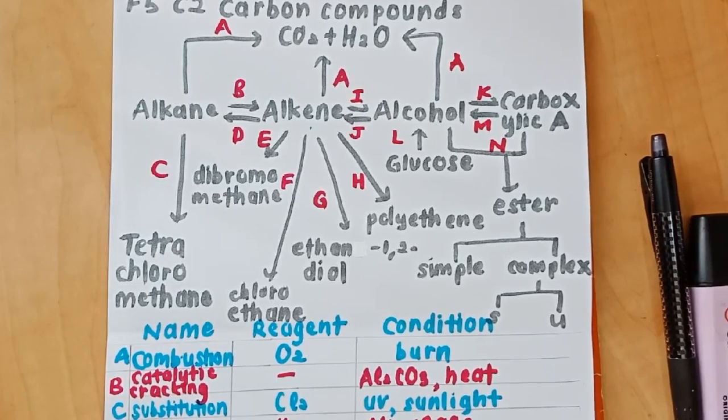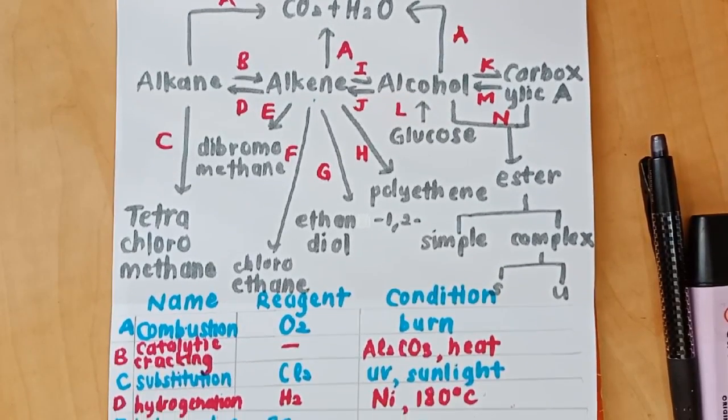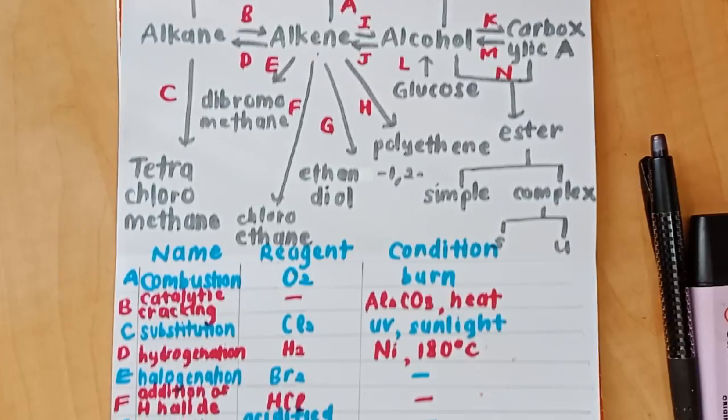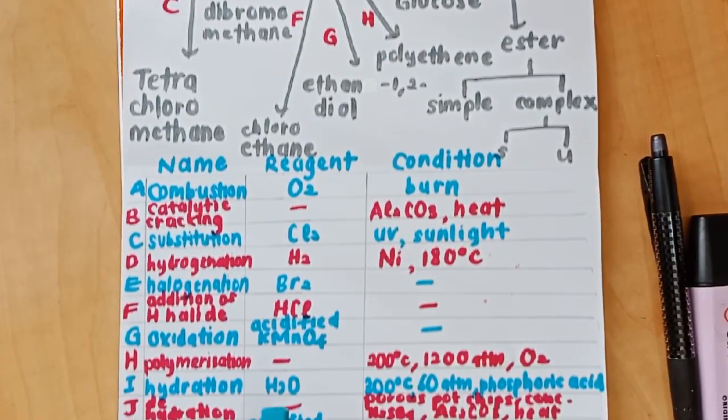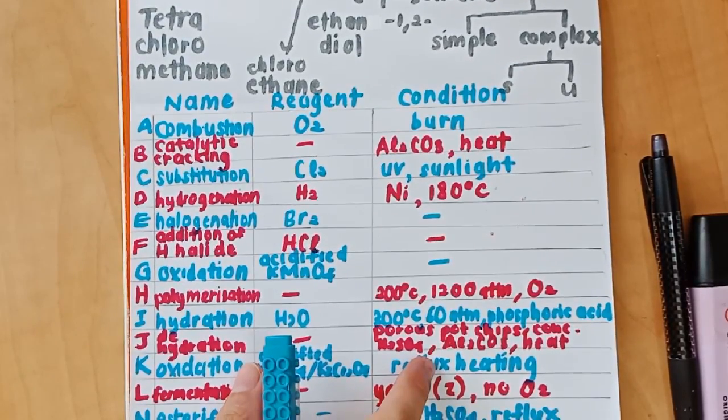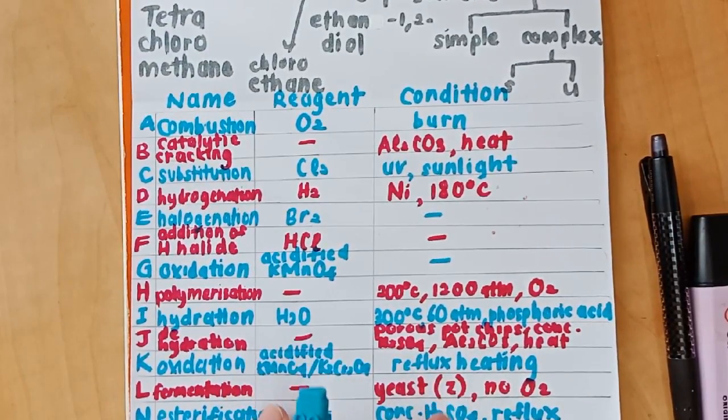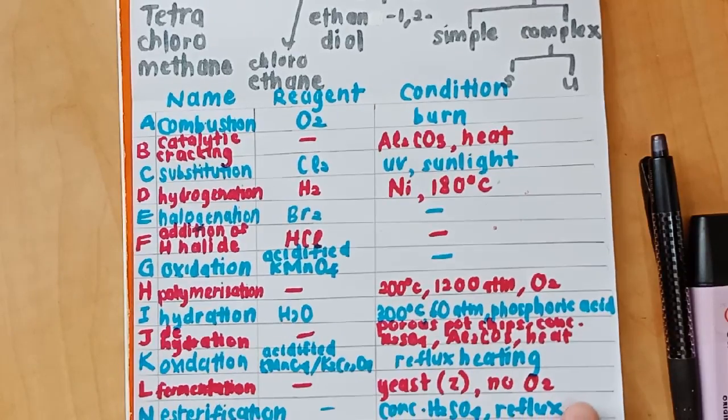So there you have it. This is the mind map which can summarize the Form 5 Chapter 2 carbon compounds. And the purpose of this video is actually to share this mind map with you guys. Because I found it to be so useful for me back then. Because this chapter is not complicated. But it has a lot of stuff to memorize. And there are a lot of reagents, conditions, name of reactions, convert what to what, and all that stuff. And it can get very overwhelming.